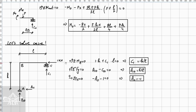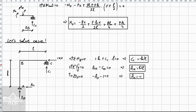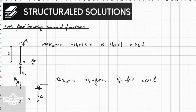Now we solve case one, where the unit load is applied at the released constraint. Using equilibrium equations: sum of moments at A equal to zero gives C₁; sum of forces in Y gives A₁₀; and sum of forces in X gives A₁₁.